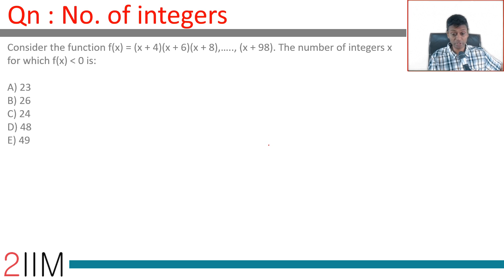Consider the function f(x) = (x + 4)(x + 6)(x + 8)... all the way till (x + 98). The number of integers for which f(x) is less than 0 is what we need to find.